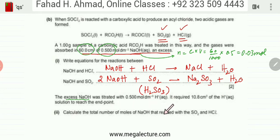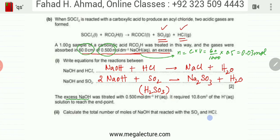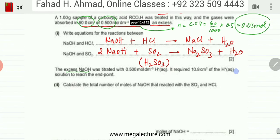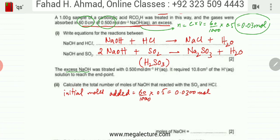You're asked to calculate the total number of moles of NaOH that reacted with SO2 and HCl. I've already figured out the excess moles initially added. The moles of NaOH initially added were 0.03, so these were the initial moles of NaOH that were added.